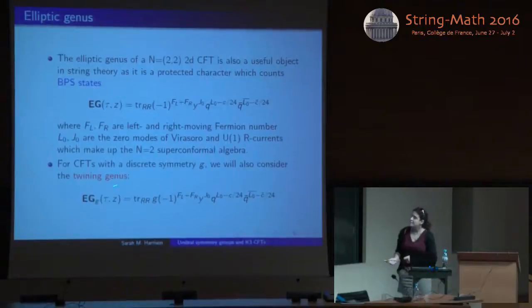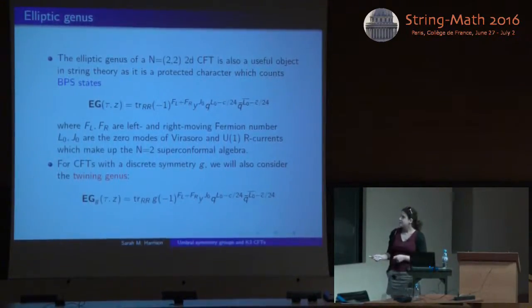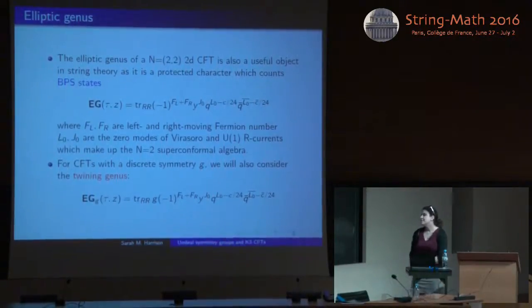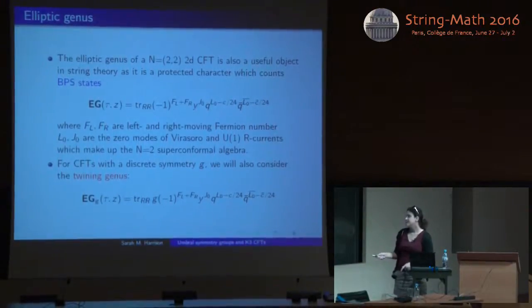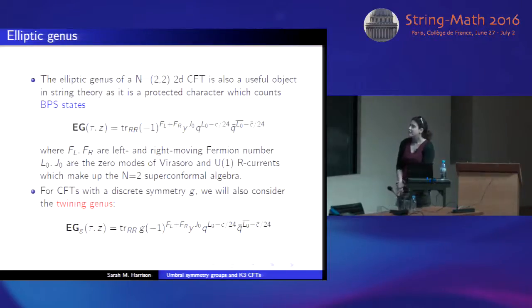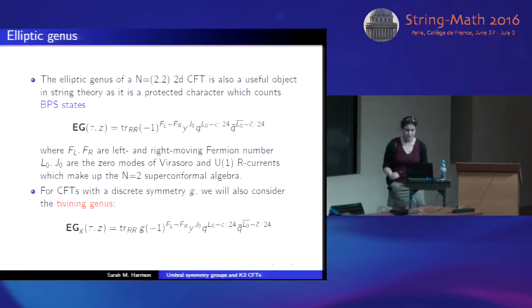The second object I'll be considering is what we often call the twining genus or twined elliptic genus, which can be computed for some conformal field theories with a discrete symmetry group G, where you insert the symmetry inside the trace. This twining genus should have good modularity properties under some subgroup of SL(2,Z) which preserves the G-twisted boundary conditions.